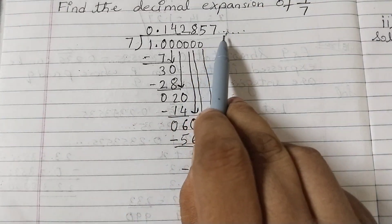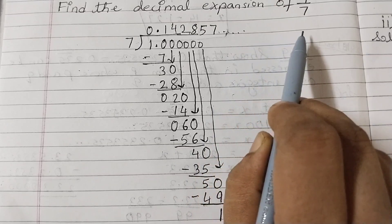So it will be again 1, 4, 2, 8, 5, 7, then 1, 4, 2, 8, 5, 7 again.